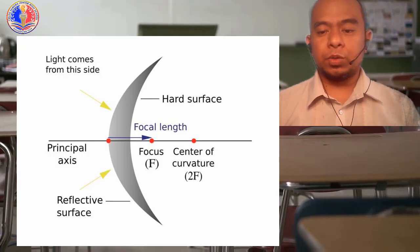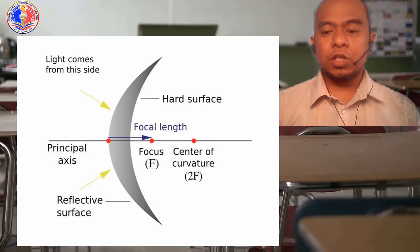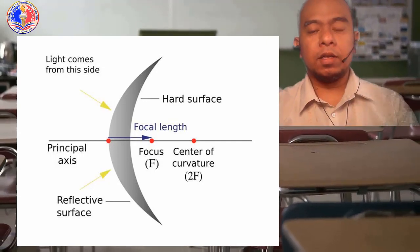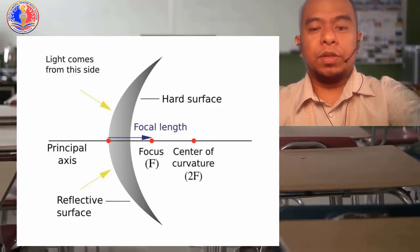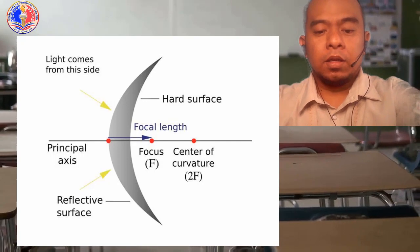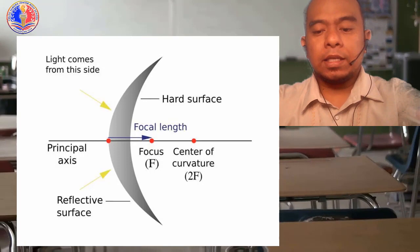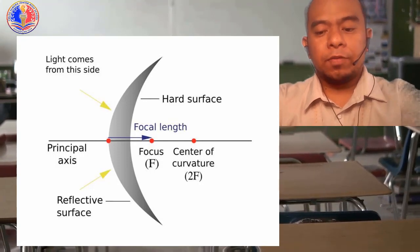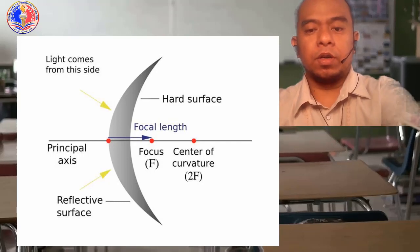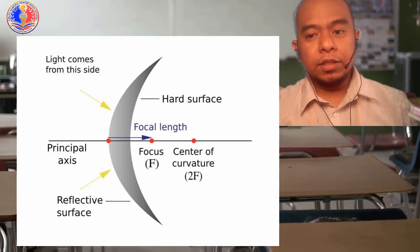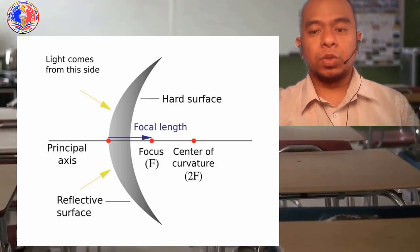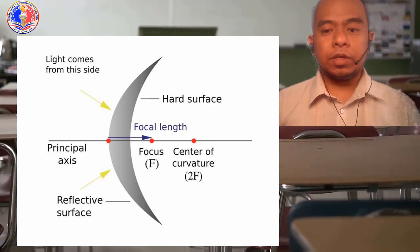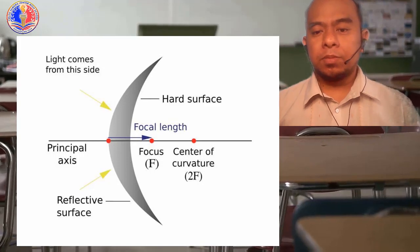Number three, the radius of curvature. It is the radius of the sphere. It is the distance between the center of curvature and the vertex, denoted by capital letter R. The center of curvature is denoted by capital letter C, while the vertex is denoted by capital letter V. The principal focus is the point where the reflected rays meet as in the case of a converging mirror, or the point where the reflected rays seem to come from behind a diverging mirror. And lastly, we have the focal length. It is the distance from the pole to the principal focus. Since the principal focus is midway between the center of curvature and the vertex, the focal length is one half of the radius of curvature, denoted by small letter f.